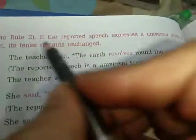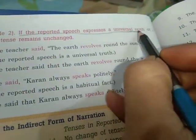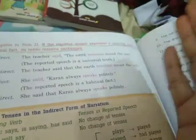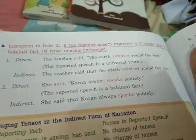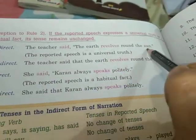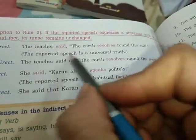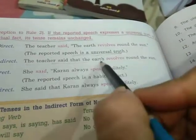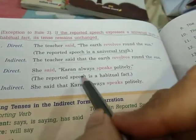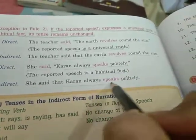Exception to Rule 2: If the reported speech expresses a universal truth or a habitual fact, the tense remains unchanged. For example: 'The teacher said the earth revolves around the sun' — since this is a universal truth, in indirect speech it remains: 'The teacher said that the earth revolves around the sun.' Similarly: 'She said Karan always speaks politely' — a habitual fact — becomes 'She said that Karan always speaks politely' with no change.